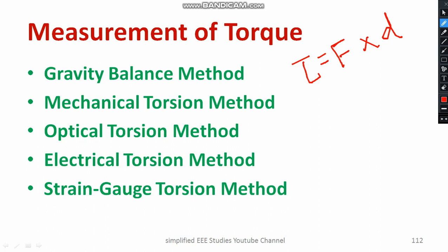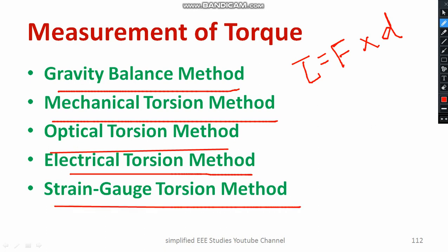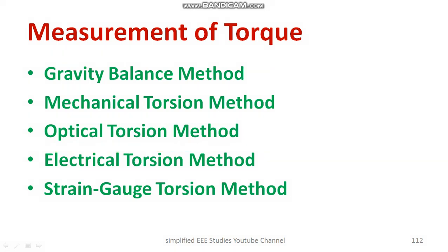The methods of measurement of torque are: gravity balance method, mechanical torsion method, optical torsion method, electrical torsion method, and strain gauge torsion method. We will discuss each individually.